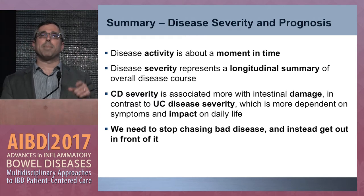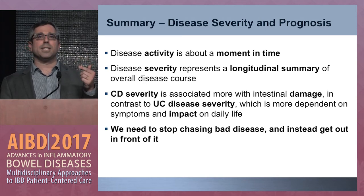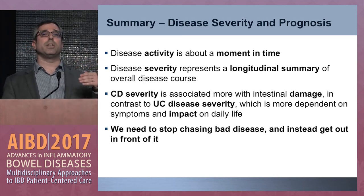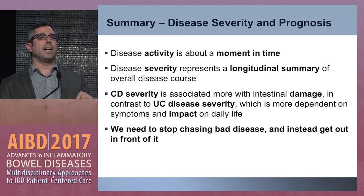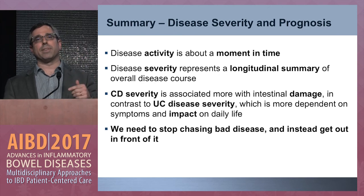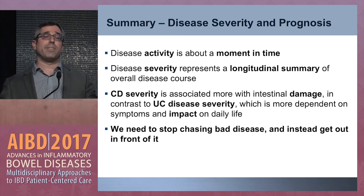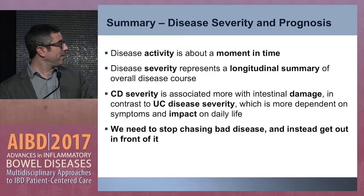In our prospective trial, patients are stratifying out just as expected — more patients in the high-risk group are having complications than in the other groups. About 80% of patients sort out as moderate to high risk, while about 20% are at low risk. You could flip this model around and say all we're really trying to do is pull out those low-risk patients and perhaps not treat them aggressively — just follow them carefully or treat symptomatically. In summary: disease activity is a moment in time, where disease severity represents the longitudinal summary of overall disease course — much more important than how they're feeling at that moment. We simply need to stop chasing bad disease and get out in front of it.